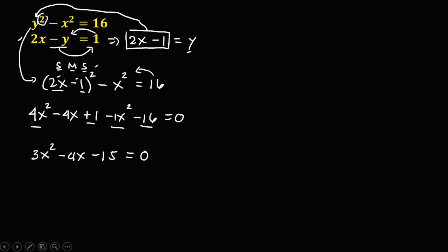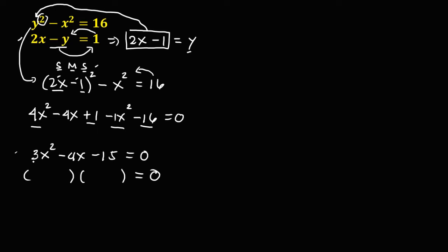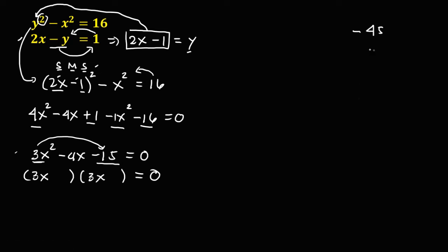Since this is a quadratic equation, we solve using quadratic factoring. First, we write 3x on both sides of the factors. We multiply negative 15 by 3 to get negative 45.